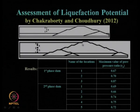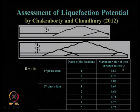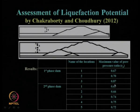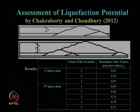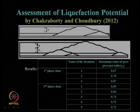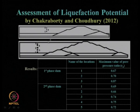Liquefaction potential must be assessed not only for the tailing material but also for the foundation soil. In terms of maximum pore pressure ratio, if R_u equals 1, the soil will liquefy; if it is less than 1, it is not liquefying, but values very close to 1 are still a concern. There is always a chance of liquefaction if input soil parameters or site conditions change. We ensured that possible liquefaction potential values were assessed to recommend safety measures for this tailing dam.